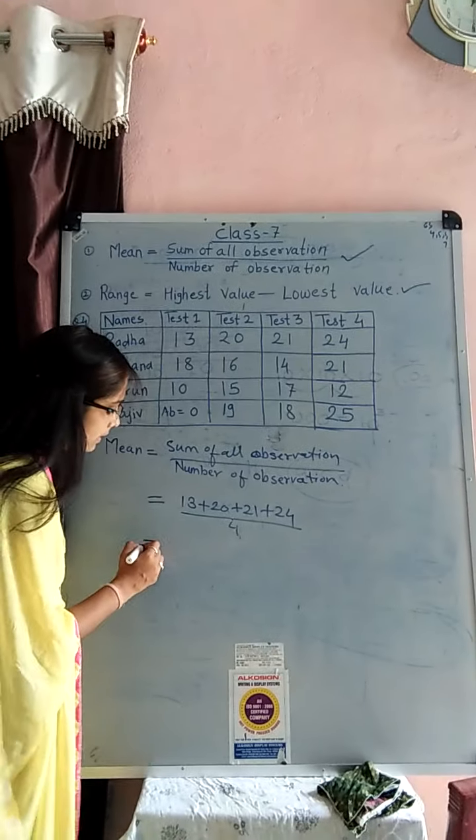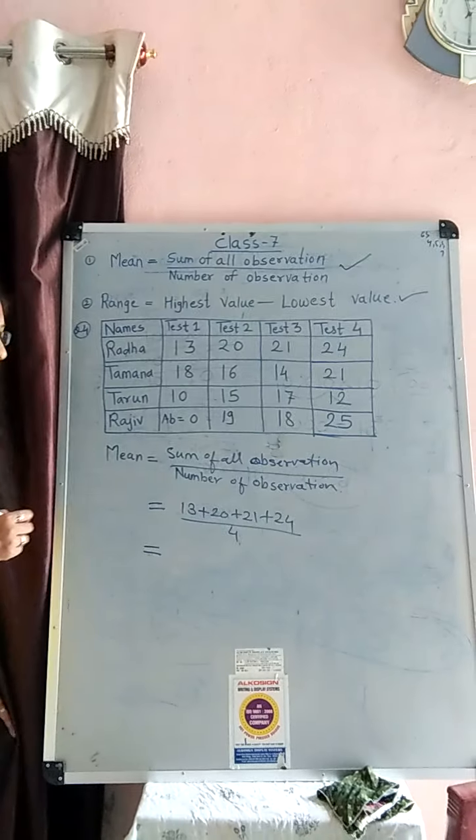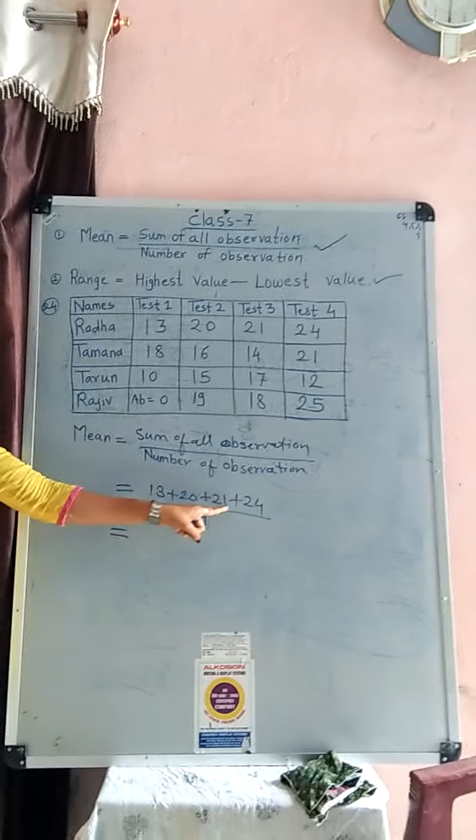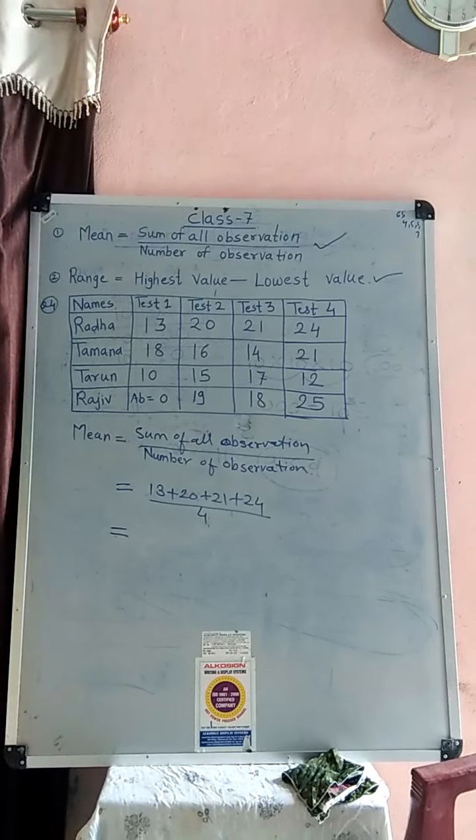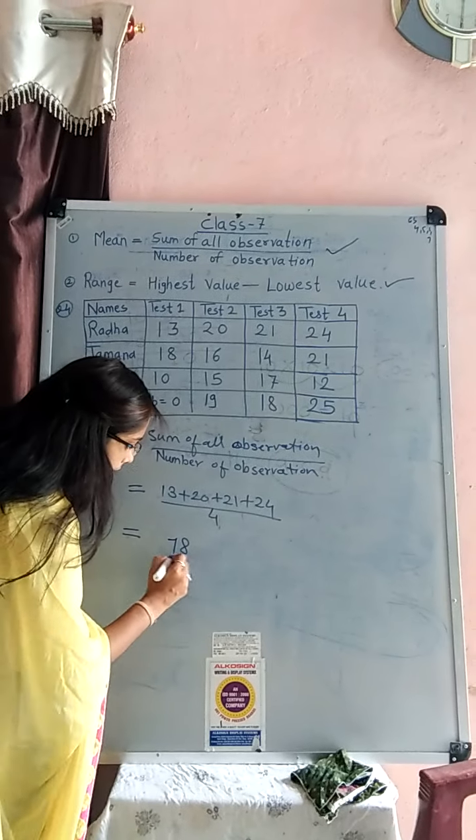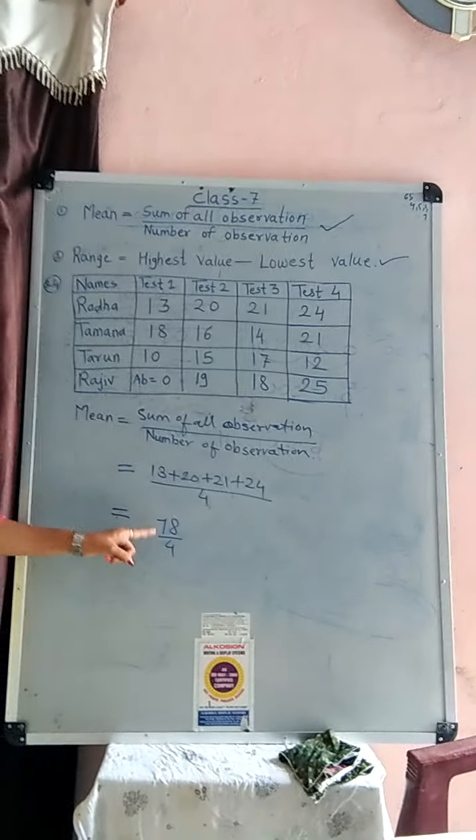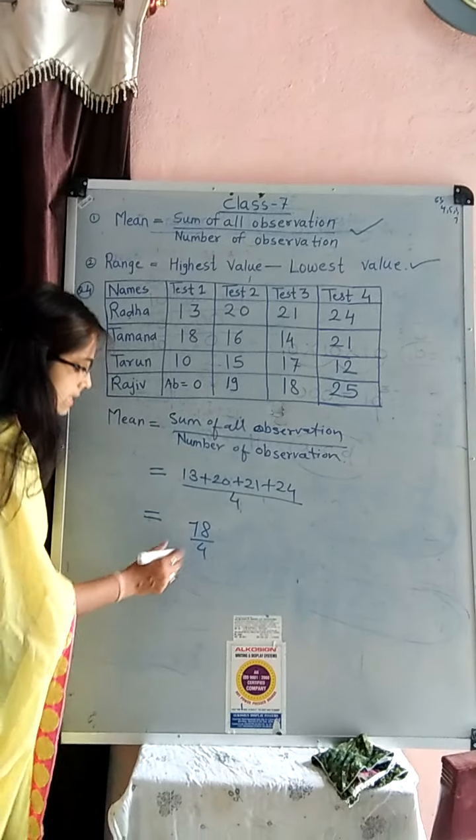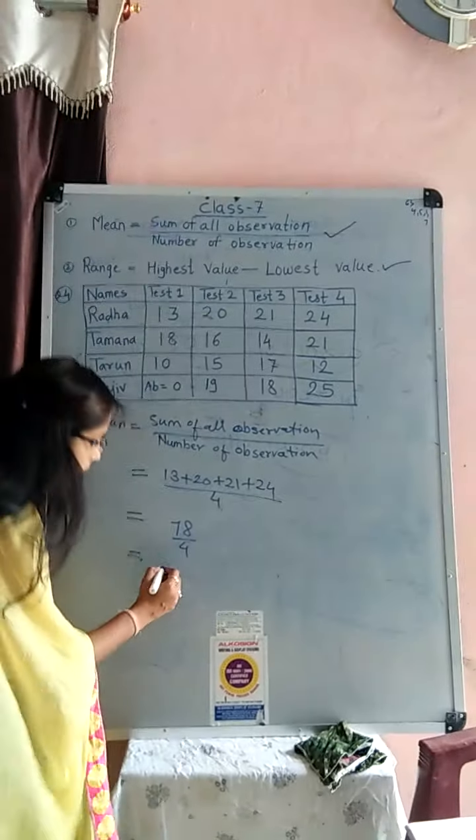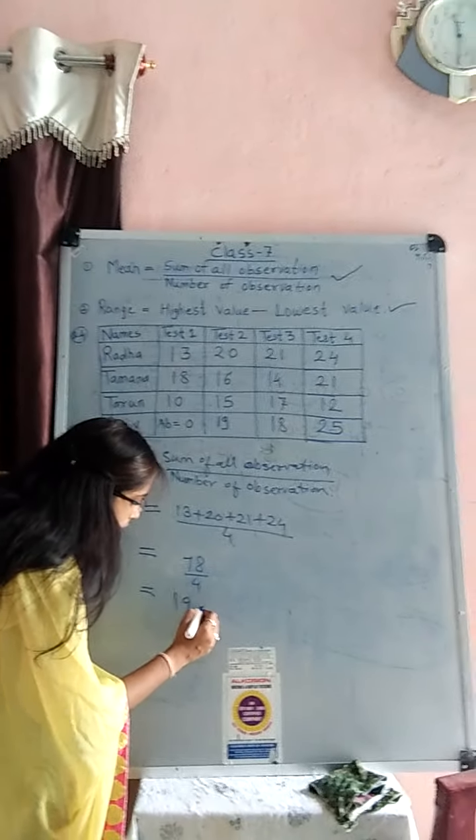Understand? Then, come down side, 13 plus 20 plus 21 plus 24 is equal to, very good, 78, 78 divided by 4. So, just divide that,